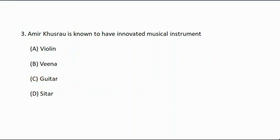Question number three: Amir Khusro is known to have innovated which musical instrument? Option A: violin, option B: veena, option C: guitar, option D: sitar. The correct answer is option D, sitar.